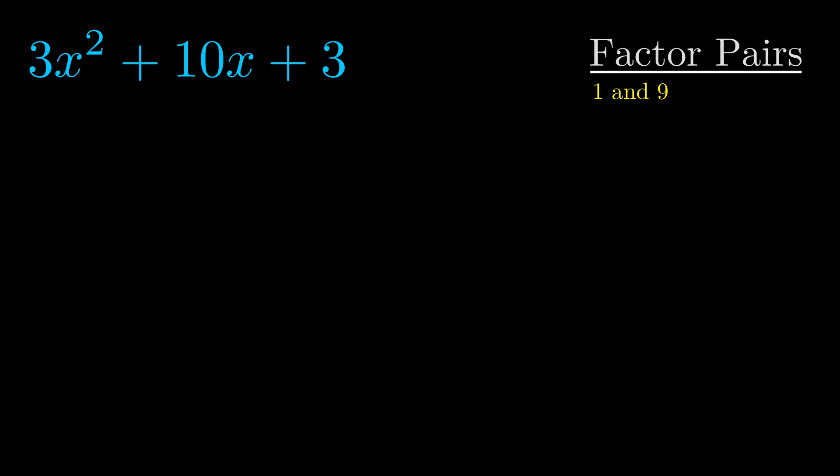Now once we have this factor pair, what we want to do is use it to split up the b value.